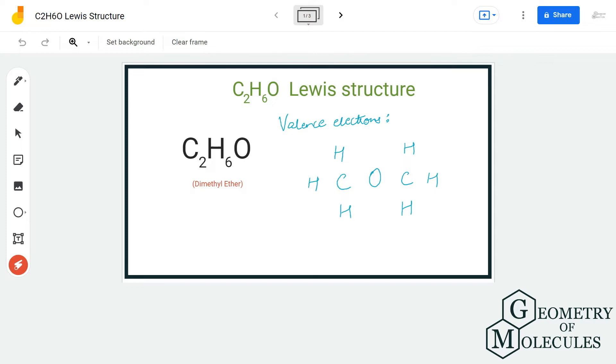Hi guys, welcome back to our channel. In today's video, we are going to help you with the Lewis structure for dimethyl ether. Now this chemical formula C2H6O can be confused with two things - it stands for dimethyl ether, but it also stands for ethanol. Here we are going to see the Lewis structure for dimethyl ether.